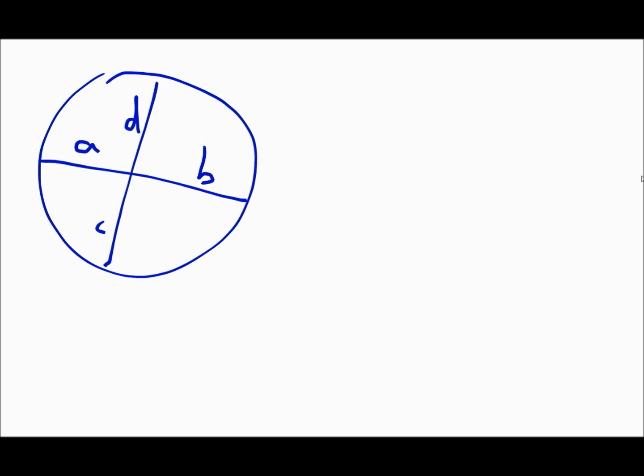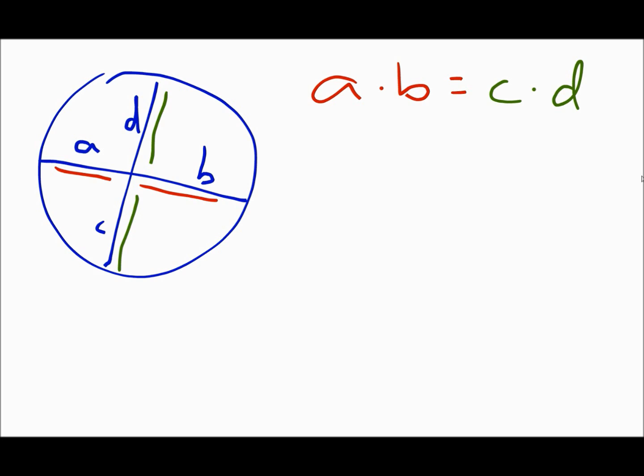When you have two chords that intersect inside the circle, the segment measures follow this formula: take one chord and multiply its two pieces together — A times B — and that equals the parts of the other chord, C times D. So take the two parts of each chord, multiply them together, and those products are equal to each other.